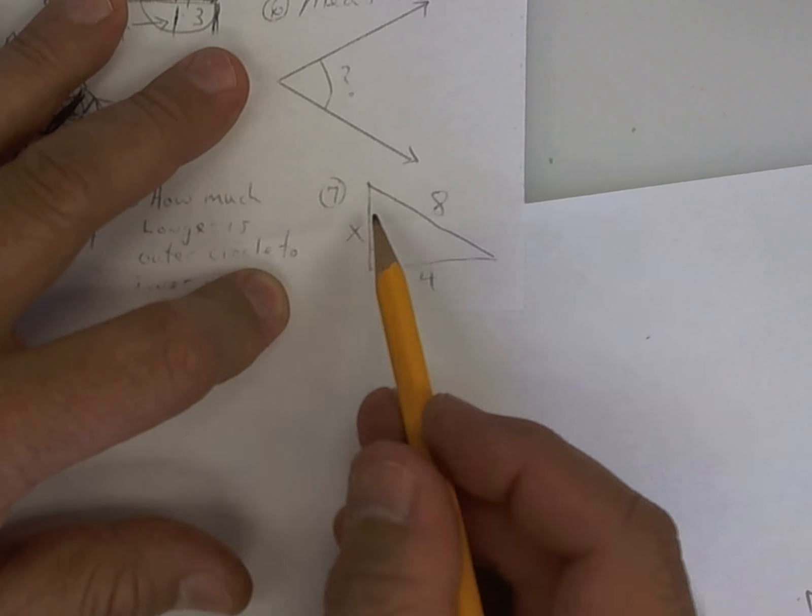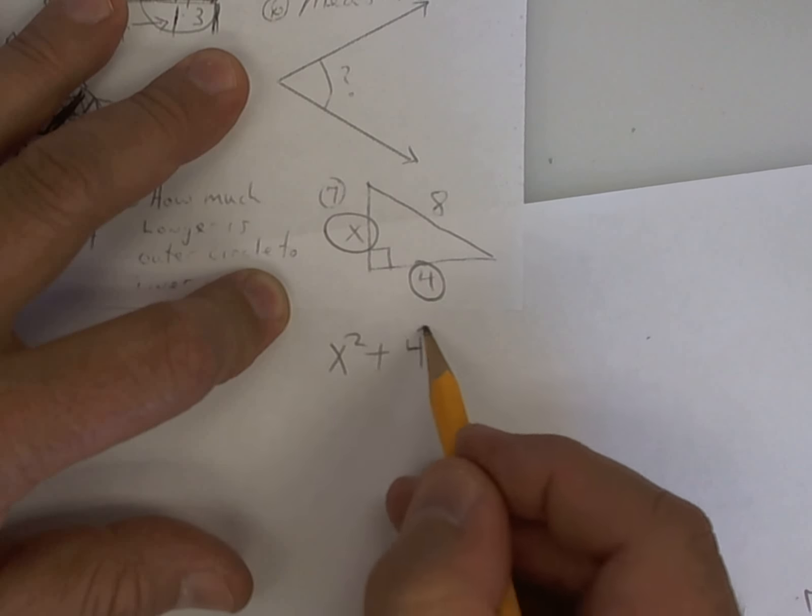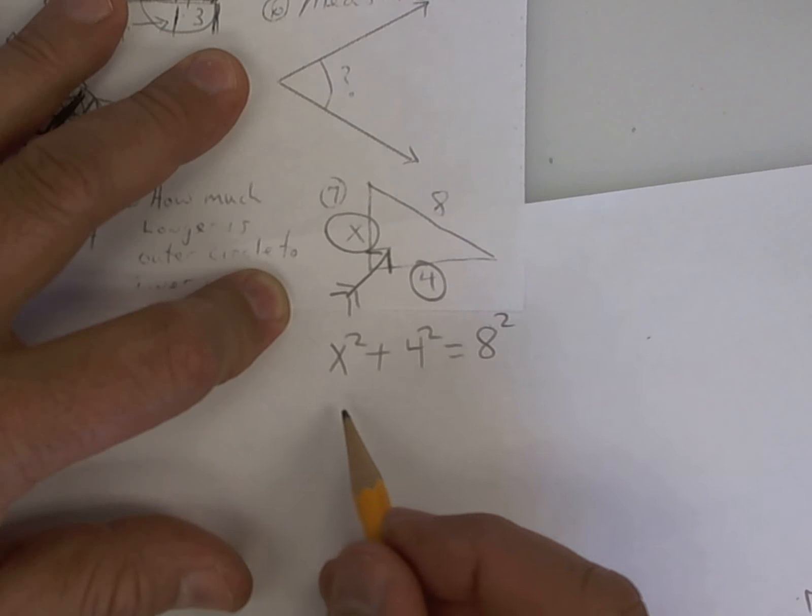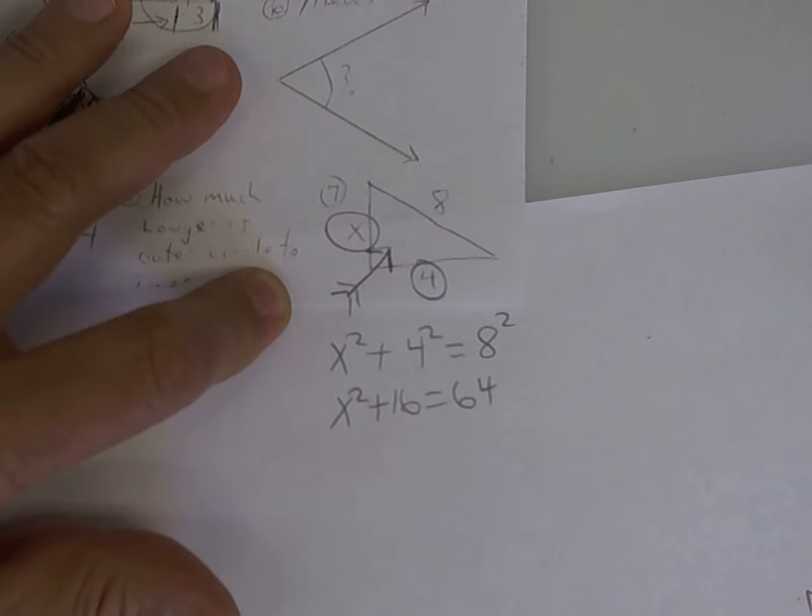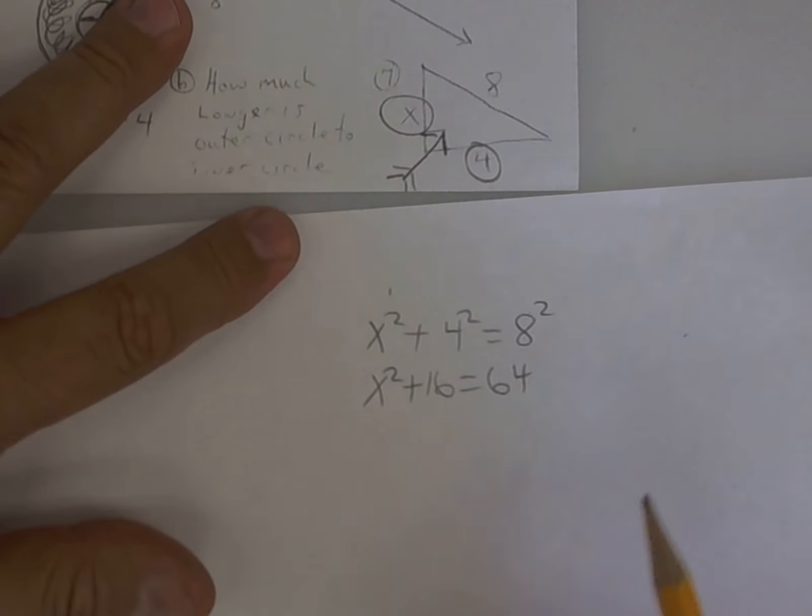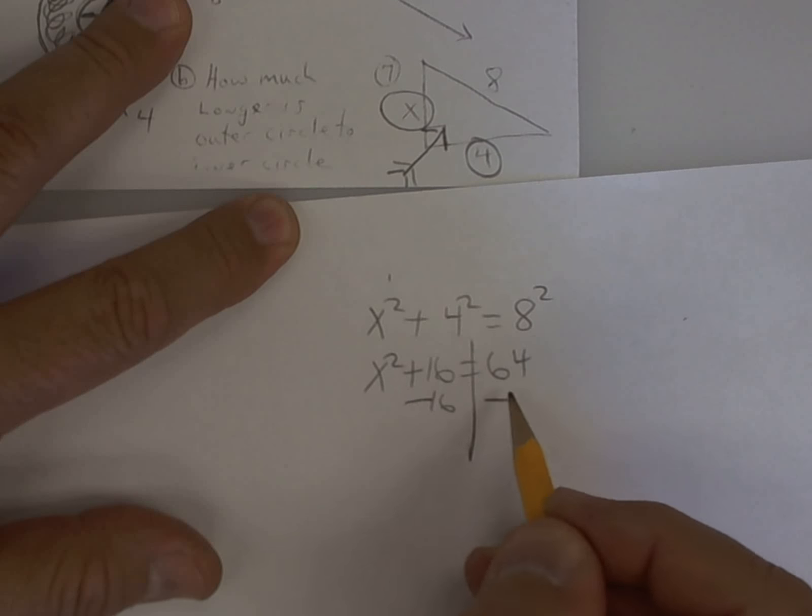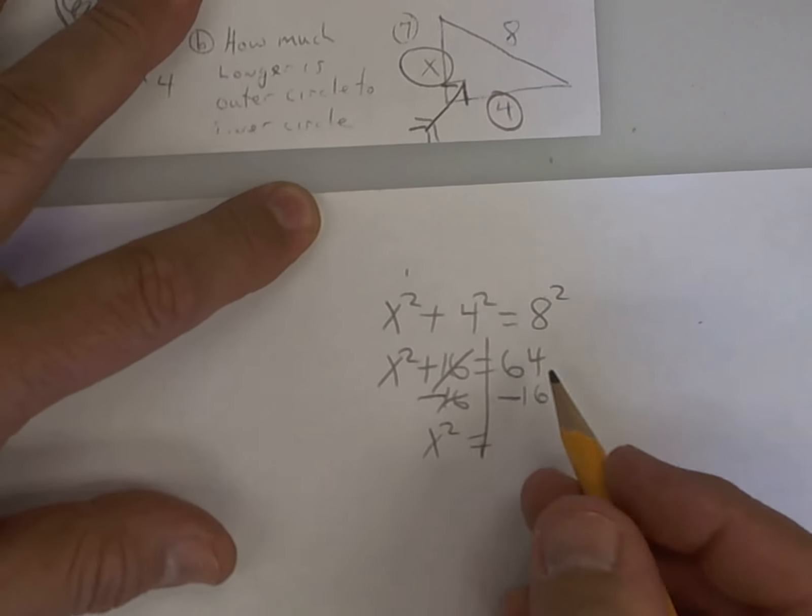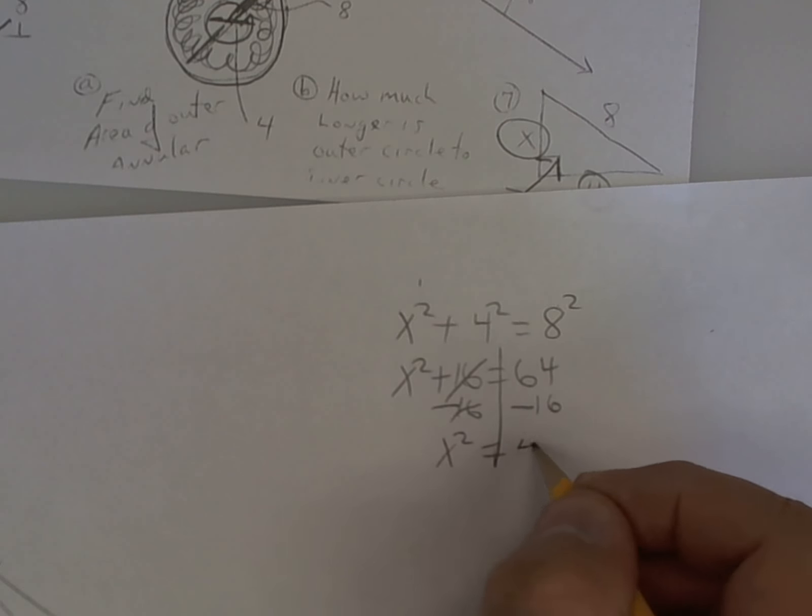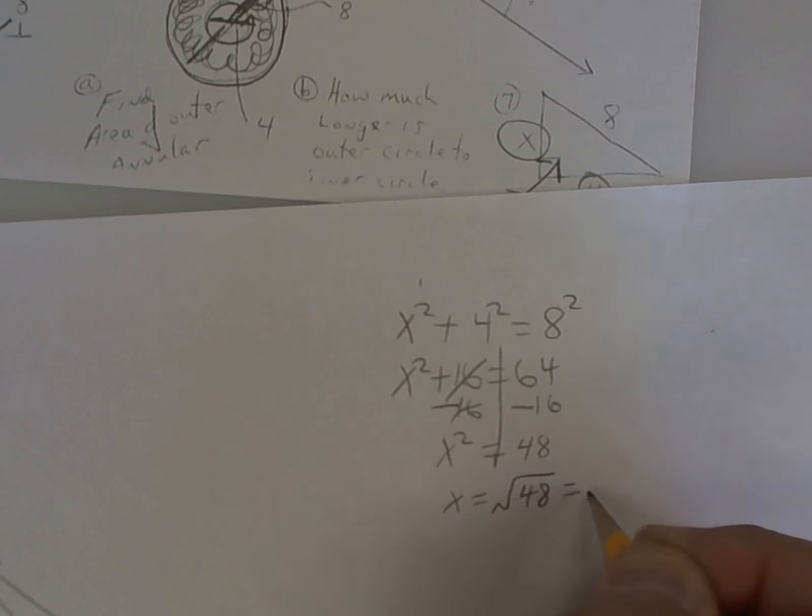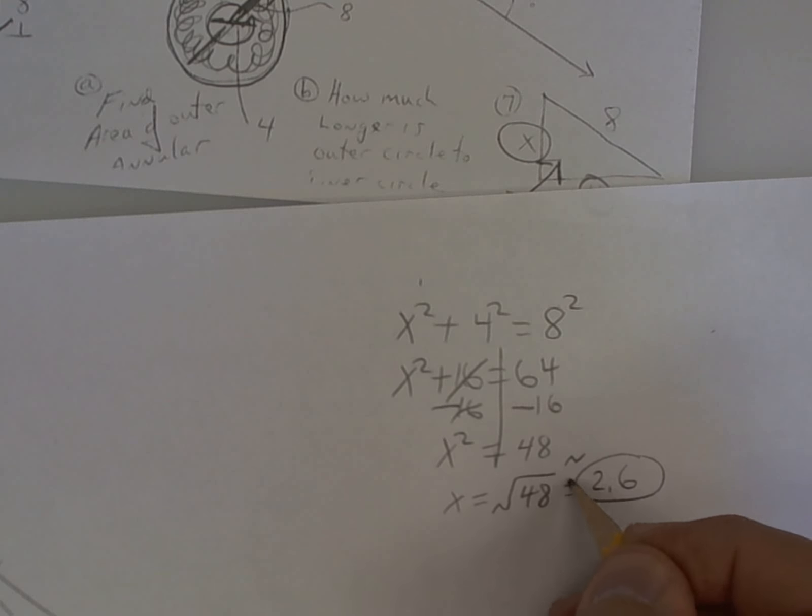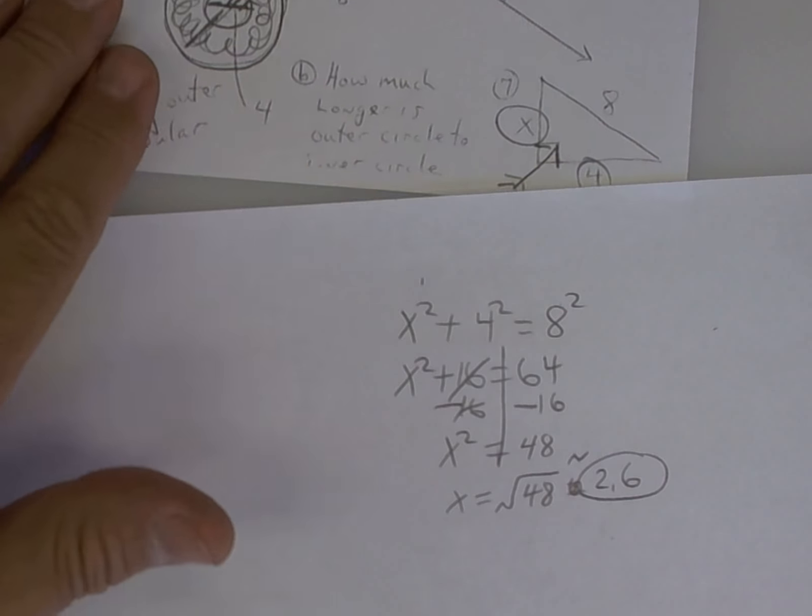Pythagorean's theorem is leg squared plus leg squared equals hypotenuse squared. The arrow points to the hypotenuse. So, it's going to be x squared plus 16 equals 64. I'm almost done. So, now, at this point, I want to draw my line, subtract 16. And then hit the square root button one time. So, 64 minus 16 is going to give me 48. And the answer is going to be the square root of 48, which equals 2.6 approximately. Any questions on how to do Pythagorean's theorem?